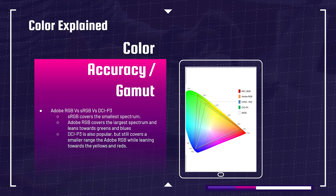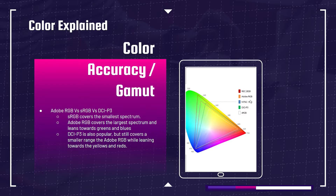Let's talk about color accuracy and the different ranges: Adobe RGB versus sRGB versus DCI-P3. sRGB covers the smallest spectrum — it's the white line at the bottom, jetting up to the lower end of DCI-P3 and Adobe RGB. Adobe RGB covers the largest spectrum for the average monitor and laptop display, leaning more towards the greens and blues. DCI-P3 is also popular but covers a smaller range than Adobe RGB, leaning towards the yellows and reds.